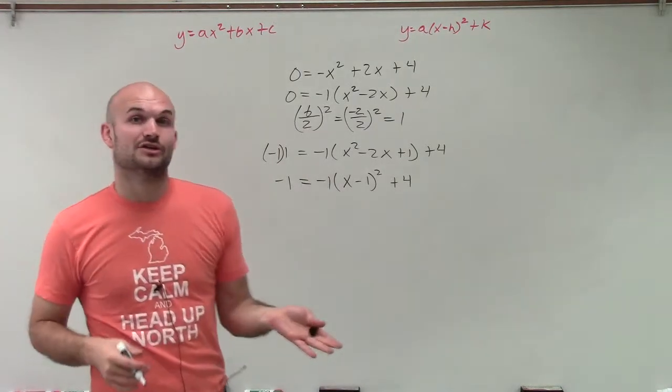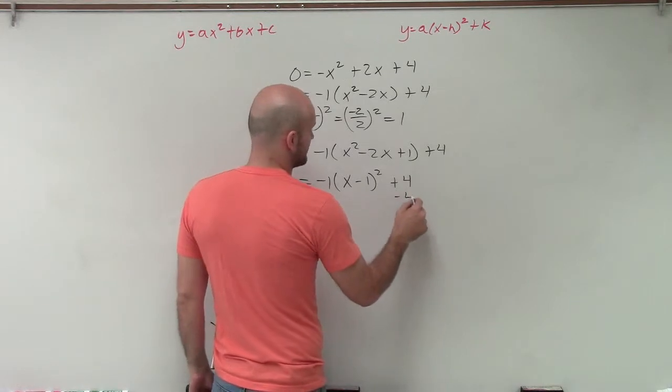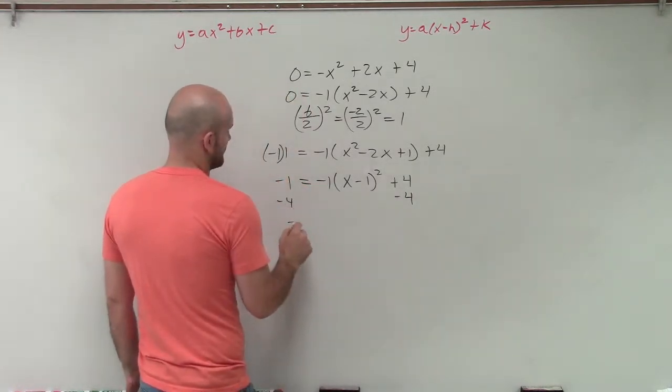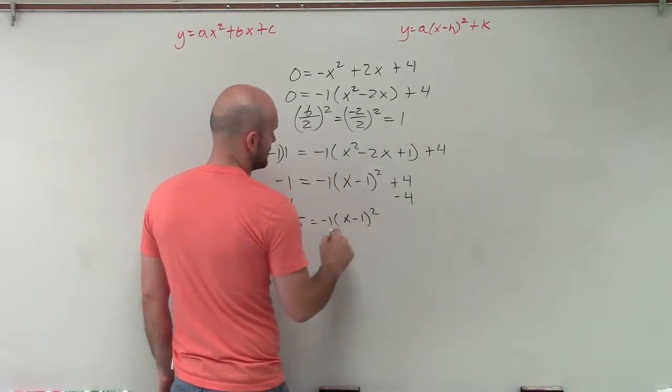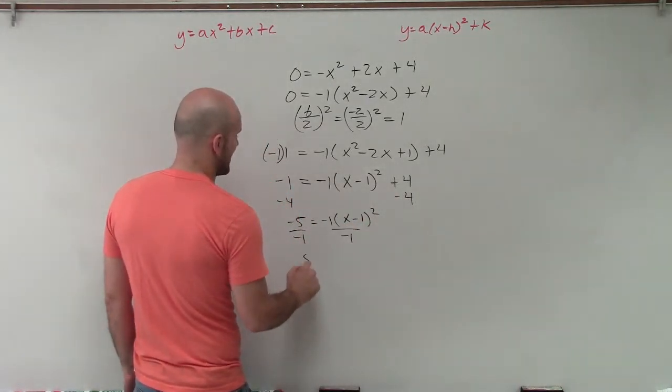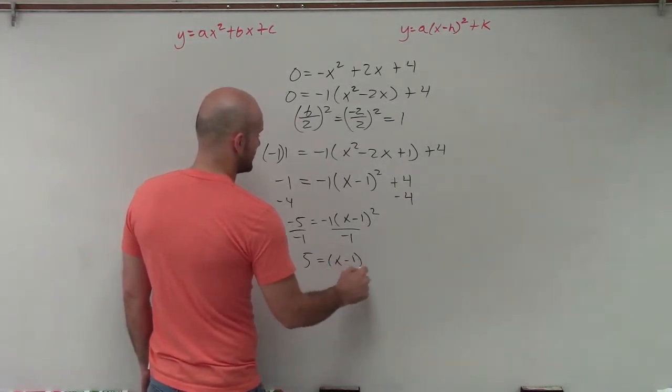Now what I can do is I can apply my inverse operations to solve. So the first thing I'll do is I'll subtract 4. So I have negative 5 equals negative 1 times x minus 1 squared, divide by negative 1. So I have 5 equals x minus 1 squared.